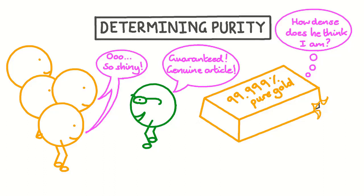In this video, we will learn what it means for a sample to be pure, and how to use purity to describe a sample that is impure. We'll also learn how to calculate the purity of a substance based on its proportion by mass, and we'll also look at how impurities impact melting and boiling points.